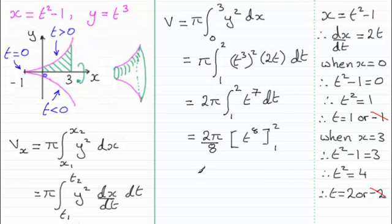So all I need to do then is simplify this. I can see that this is pi over 4. So we've got pi over 4. And if I substitute 2 in here, I've got 2 to the power 8 minus 1 to the power 8. Then working that out, what do I get? I get 255 pi all over 4.